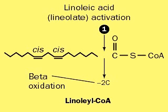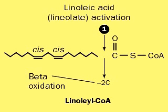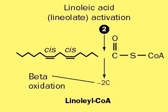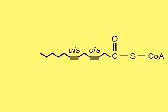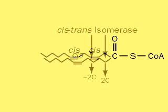Three beta-oxidation cycles cleave the first six carbons before encountering an unsaturated pair of carbons. A cis-trans isomerase changes the orientation of the double bond, and the next two carbons are then removed by further beta-oxidation.